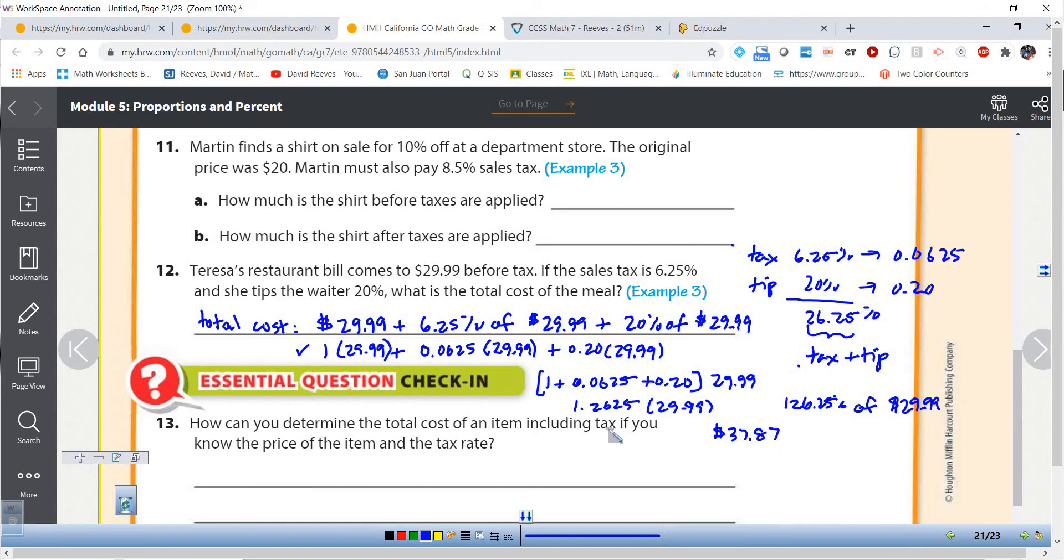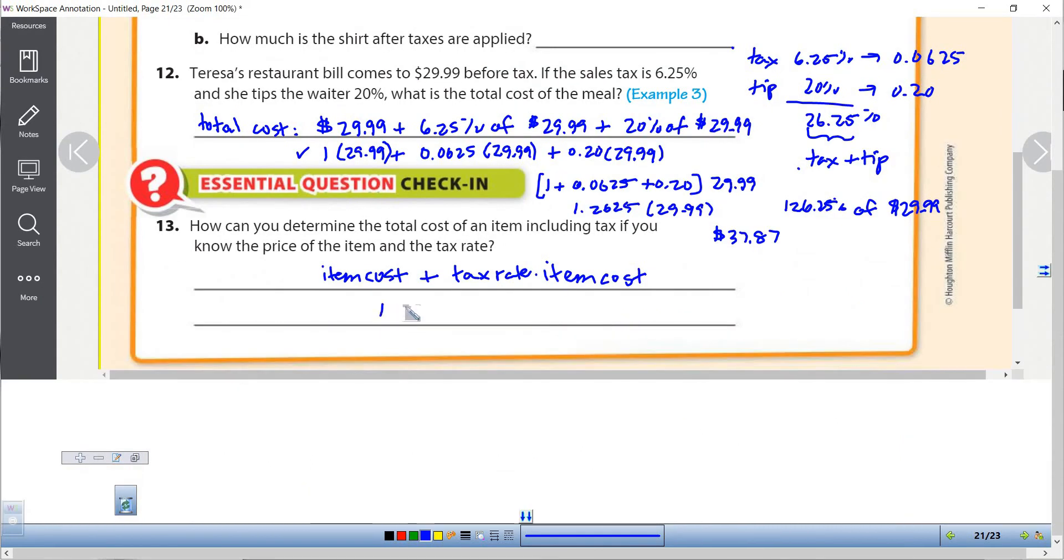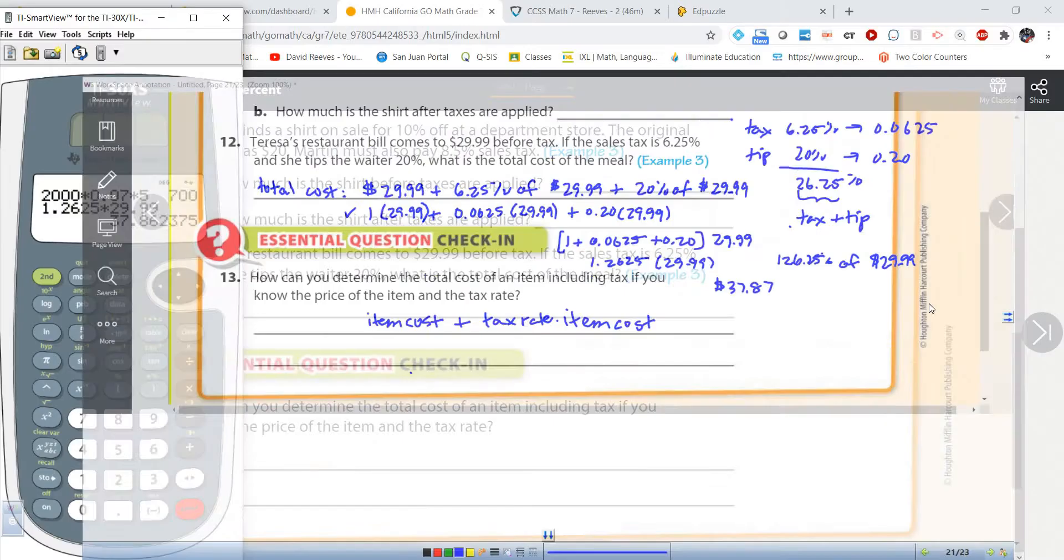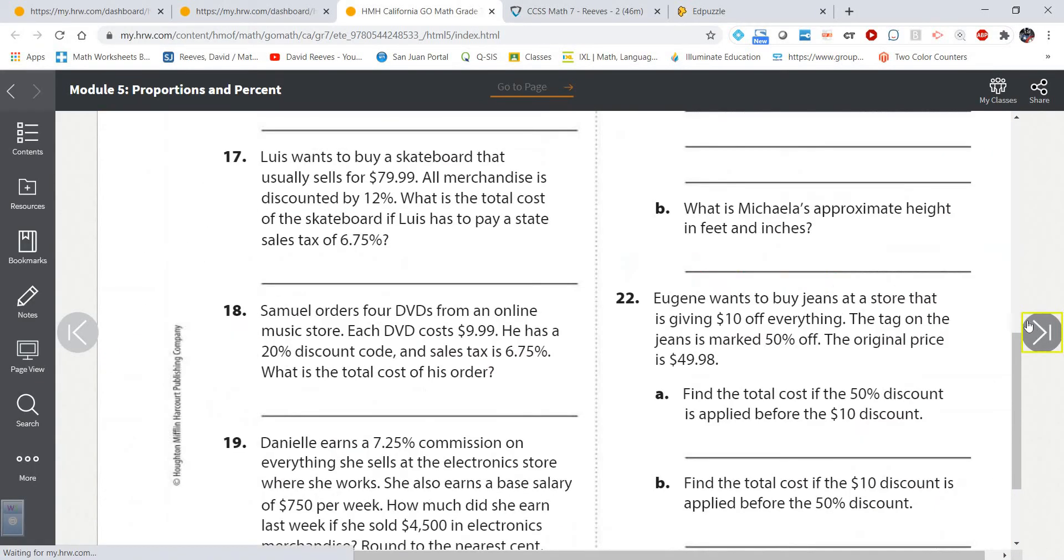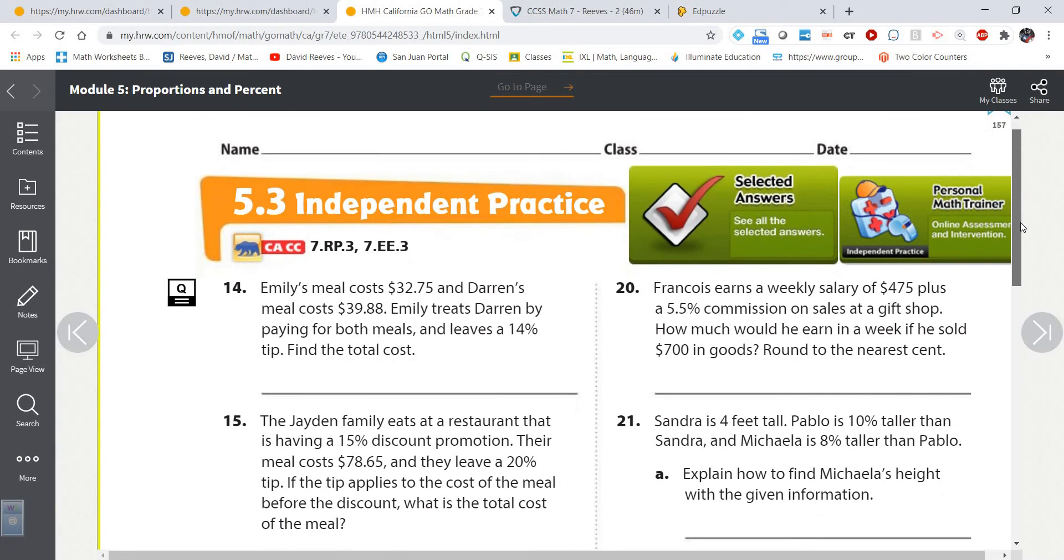How can you determine the total cost of an item, including tax, if you know the price of the item? Again, it's the item cost plus the tax rate times the item cost. Or remember, we could do 100% plus whatever the tax rate is built in. We talked about that.